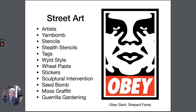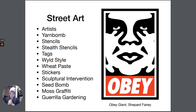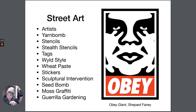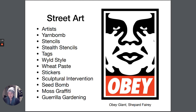Stickers, sculptural intervention, seed bombs, moss graffiti, and guerrilla gardening are also techniques people use. Sculptural intervention is creating a sculpture in a site-specific area without permission. A seed bomb is flower seeds mixed with soil and dropped in public areas so flowers grow. Moss graffiti involves blending moss and soil and painting it onto brick or concrete walls so the moss grows in the shape you paint. Guerrilla gardening is like seed bombing but involves planting actual plants or trees without permission.